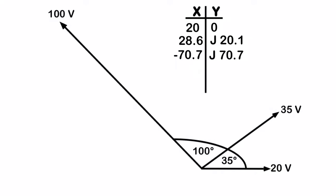Now I go ahead and I add up all my X's, and I add up all my Y's, and I get my rectangular version of the addition of these vectors. So I get negative 22.1 for my X, and j 90.8 for my Y.